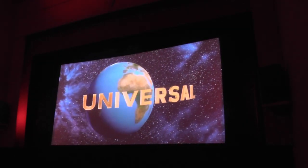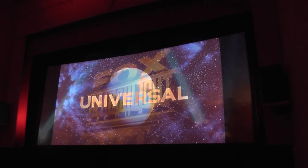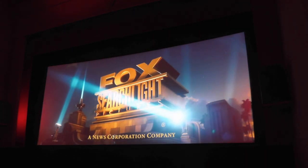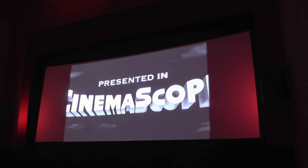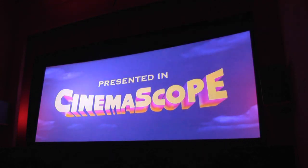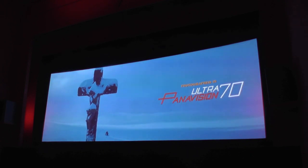From this projector position I can now screen widescreen and scope at constant height. By setting the zoom lens to almost full wide angle I can now screen 2.55 to 1, the original cinema scope ratio, and 2.76 which is 70mm with an anamorphic lens added.